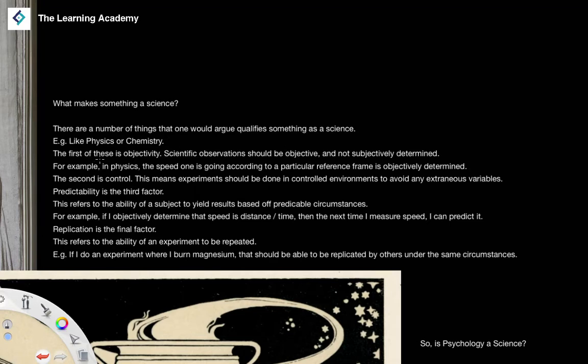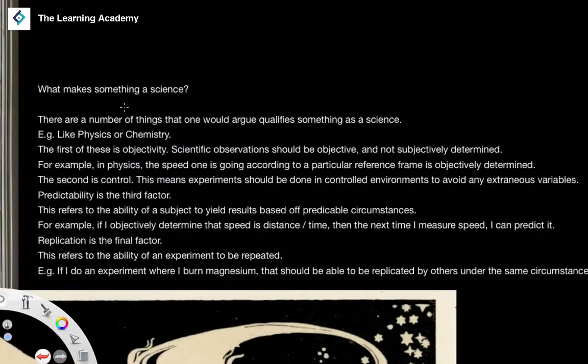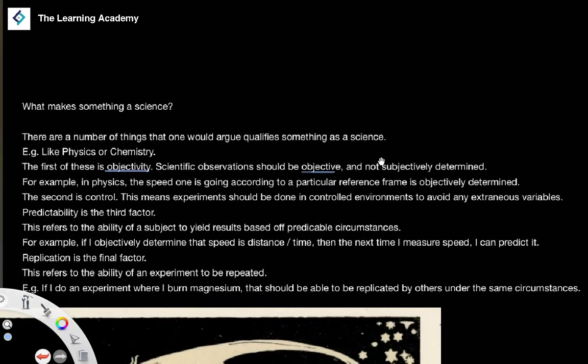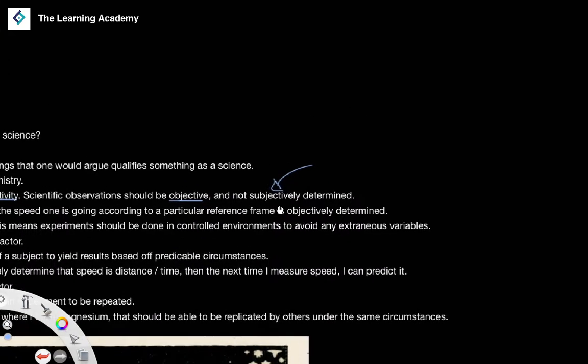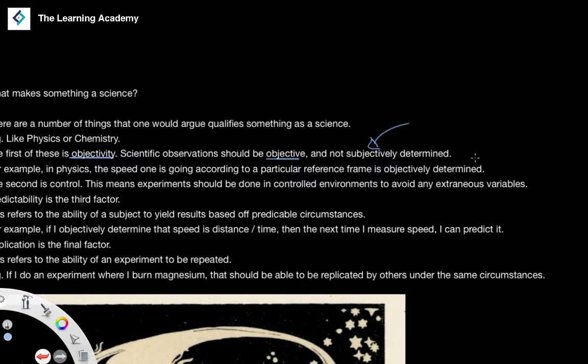So, for example, the first of these characteristics is objectivity. Now, by this, we mean that scientific observations ought to be objective. It means they are not subjectively determined. So it doesn't actually depend on the subject. It doesn't depend on the subject whether or not we yield certain results.